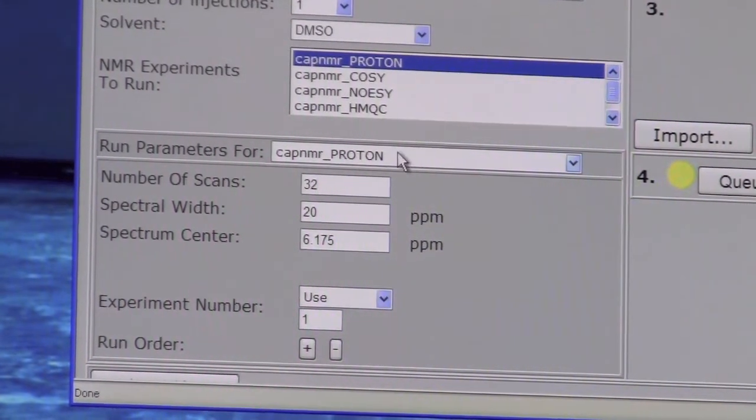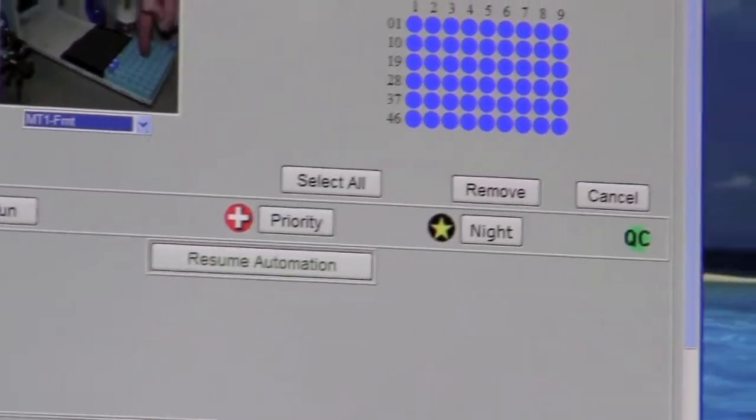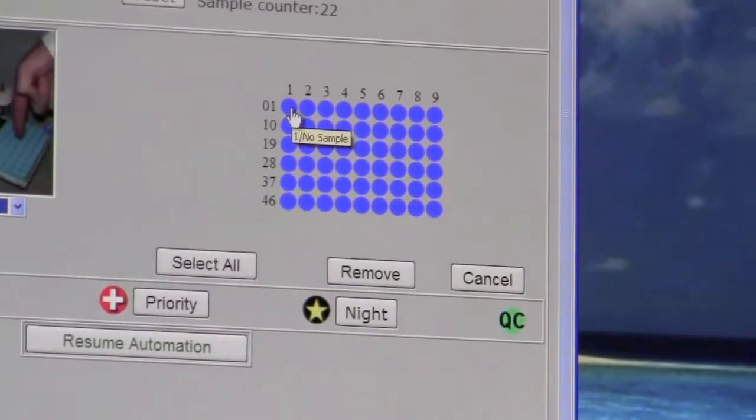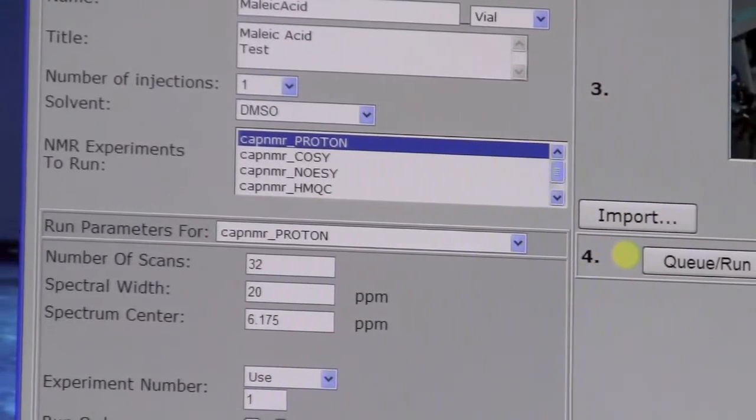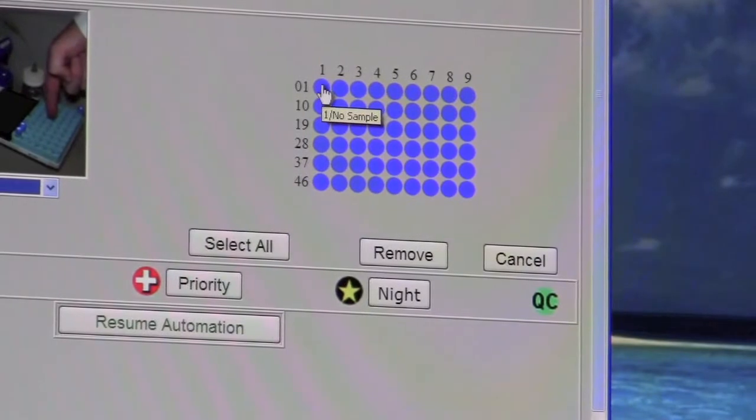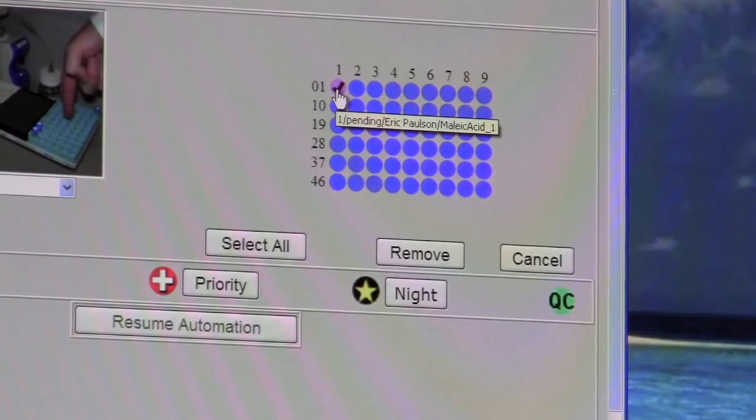Once you have everything set the way you want here, come over to step three. Make sure the tray is chosen, matching where you loaded your sample. And then click on the dot for where your sample is. This is sample number one, all the way down to sample number 54. When you click on this, everything over here gets loaded into the system. So make sure everything in step two is finished before you click on step three. So we're going to click number one, because our sample is in number one. And there will be a check mark on number one. That means it's ready to go.